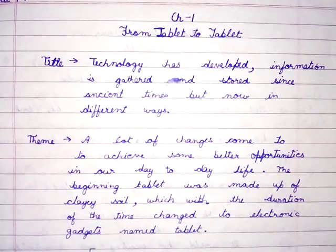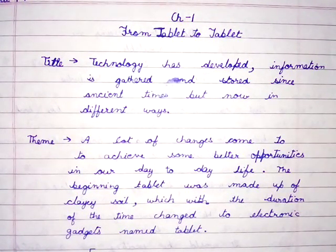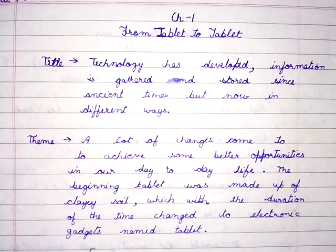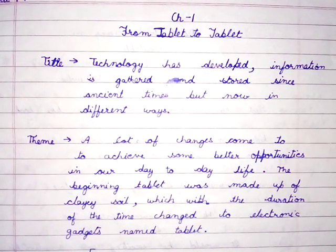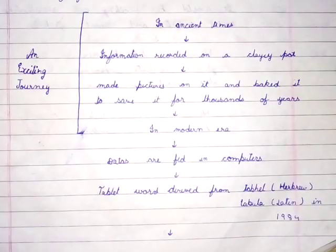Title: Technology has developed; information is gathered and stored since ancient times but now in different ways. The theme: a lot of changes have come to achieve better opportunities in our day-to-day life. The beginning tablet was made up of clay soil, which with the duration of time changed to electronic gadgets named tablet.